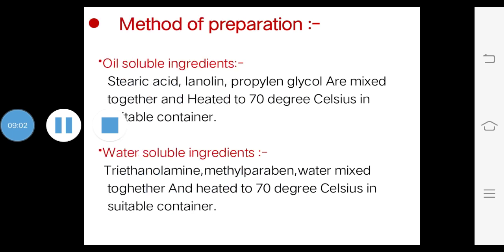Here I discuss the method of preparation of vanishing cream. For preparation, two phases are required: the oil phase and the aqueous phase. For the oil phase, oil-soluble ingredients such as stearic acid, lanolin, and propylene glycol are mixed together and heated to 70°C in a suitable container such as a china dish or porcelain dish. For the aqueous phase, water-soluble ingredients such as triethanolamine, methyl paraben, and water are mixed together and heated to 70°C in a suitable container.